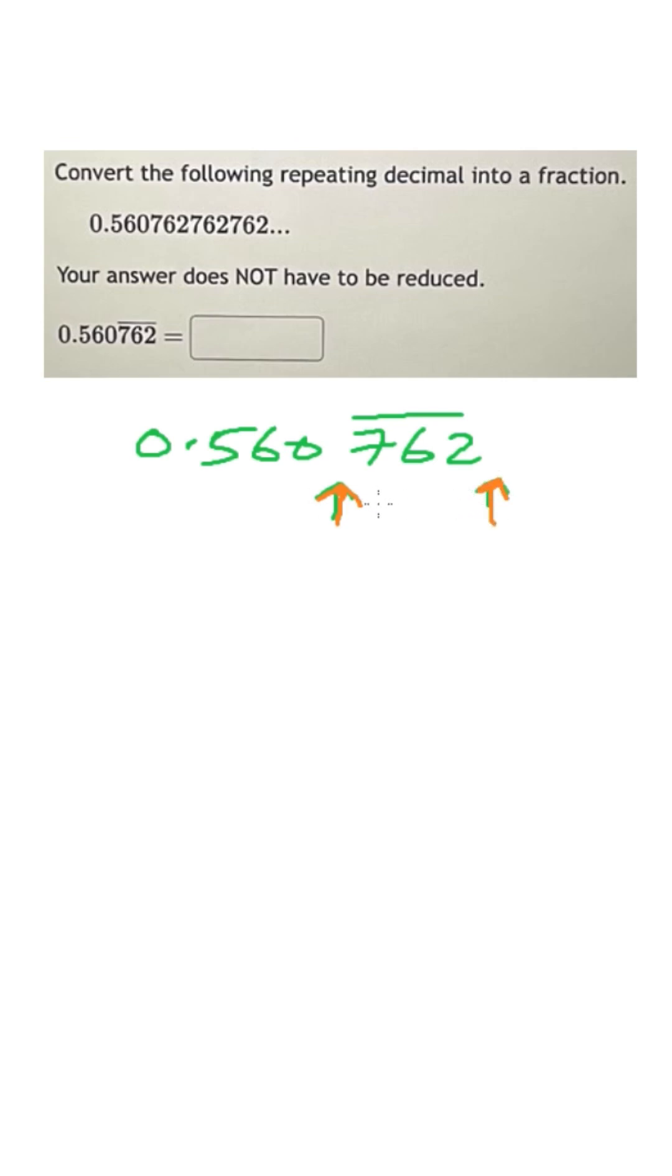Let's say this number is equal to x. Now, multiplying it by 1 million will be 1 million x is equal to, point will come here at this place, so it is 560762 point, and then we have 762 repeating. They are repeating indefinitely.